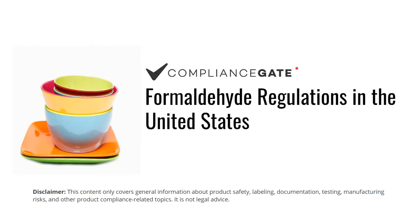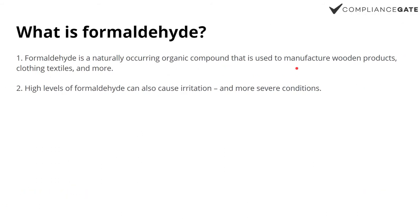Hey, in this video I will cover formaldehyde regulations and restrictions in the United States. Formaldehyde is a naturally occurring organic compound that is used to manufacture certain wooden products but can also be used in the textiles industry.